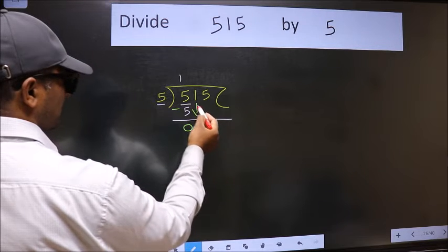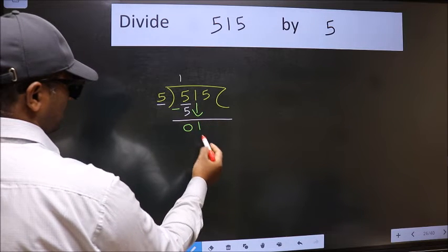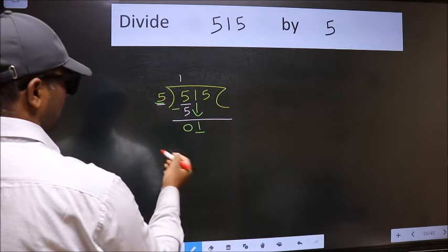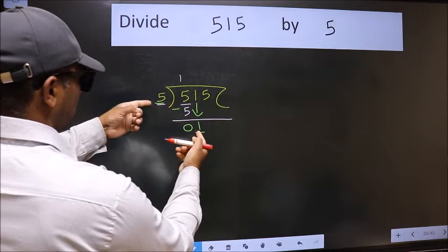After this, bring down the beside number. So 1 down. Now here we have 1 and here 5. 1 is smaller than 5.